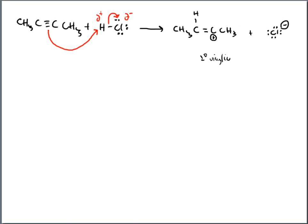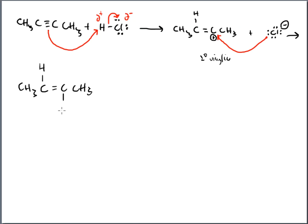The negative chlorine's arrow points to the positive carbocation. The result: CH3–C(H)=C(Cl)–CH3 — a vinyl chloride intermediate. Now we add another HCl. The same mechanism applies: HCl is polar, the double bond acts as the nucleophile and attacks the hydrogen, pulling it off, while chlorine takes the electrons from the H–Cl bond.